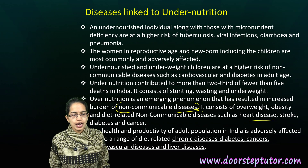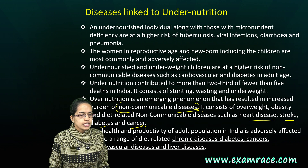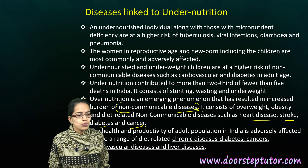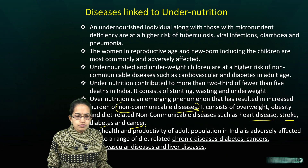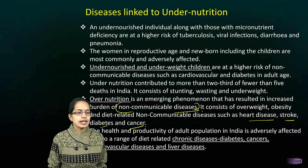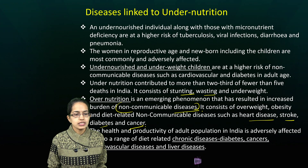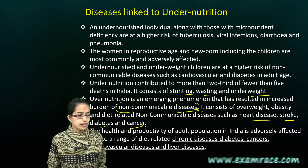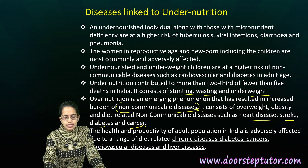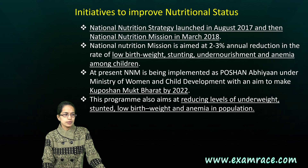Undernutrition contributes to nearly two-thirds of under-five deaths, mainly in the form of stunting, wasting, and underweight. We are also focusing on chronic diseases, viral infections, and tuberculosis associated with undernutrition.